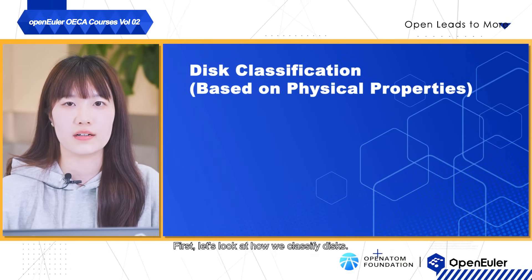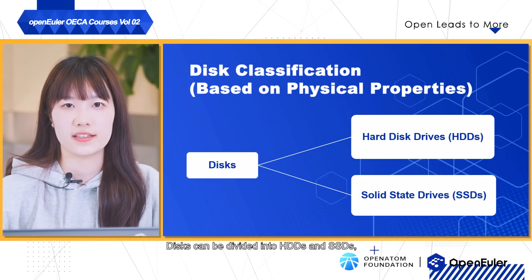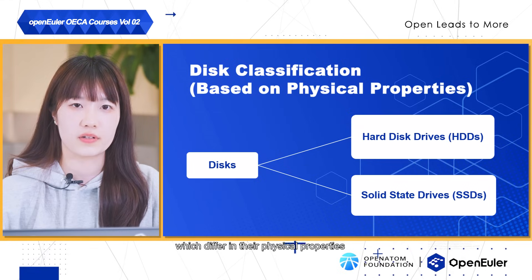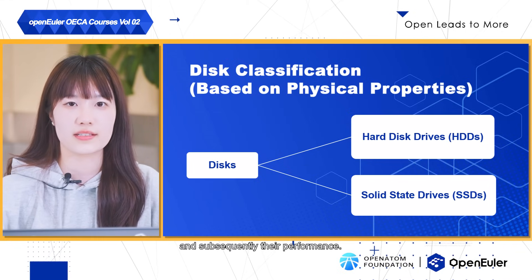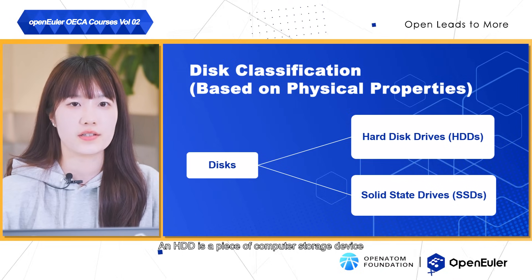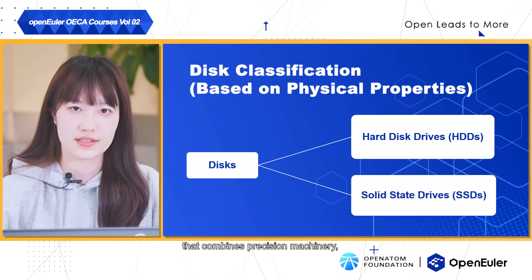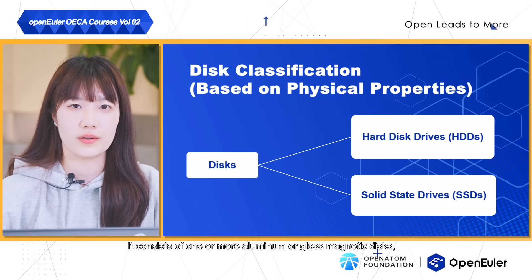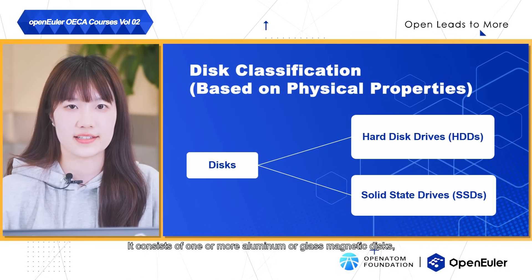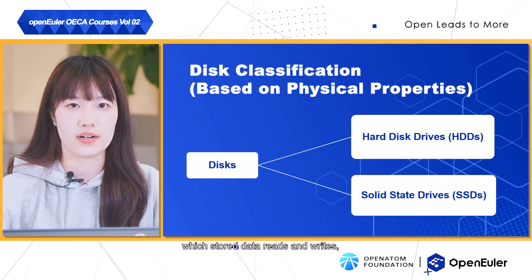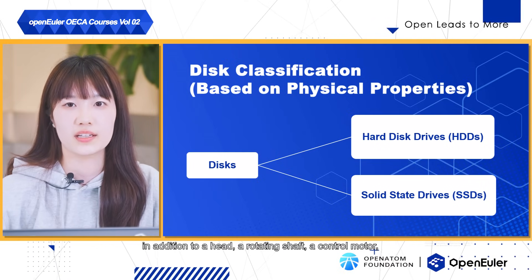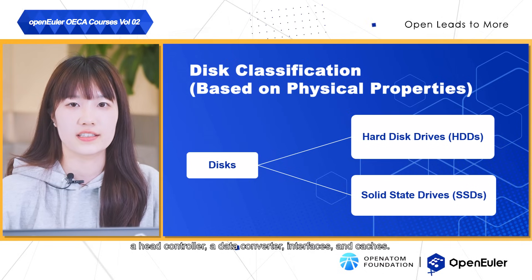First, let's look at how we classify disks. Disks can be divided into HDDs and SSDs, which differ in their physical properties and subsequently their performance. An HDD is a piece of computer storage device that combines precision machinery, micro-electronic circuits, and electromagnetic conversion. It consists of one or more aluminum or glass magnetic disks, which store data reads and writes, in addition to a head, a rotating shaft, a control motor, a head controller, a data converter, interfaces, and caches.